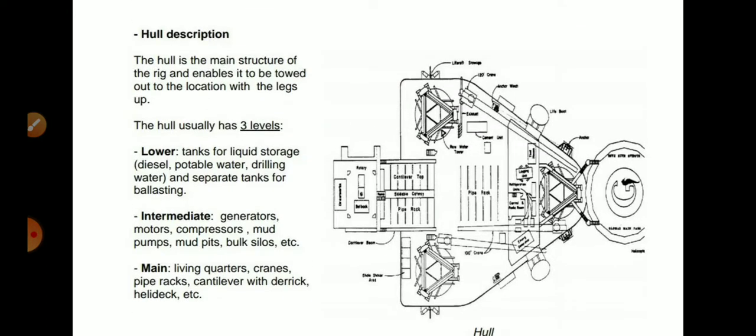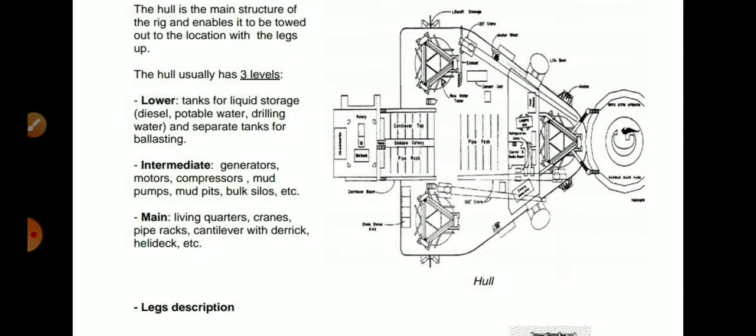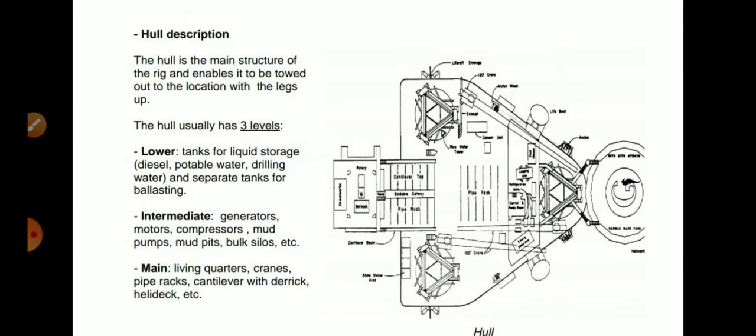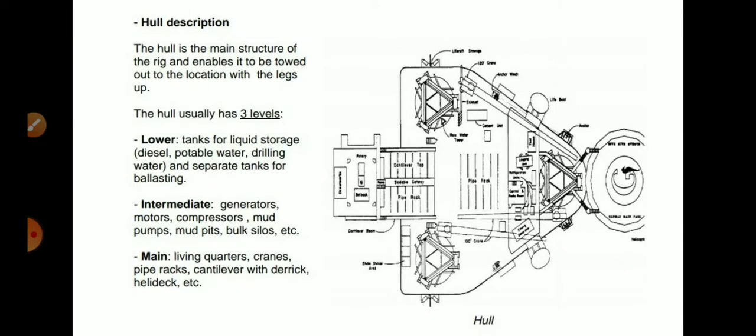The hull is the main structure of the rig and it allows the rig to be towed out to the location with the legs up. The hull usually has three levels: lower level, intermediate, and main level. The lower level contains tanks for liquid storage — diesel, portable water, drilling water, and separate tanks for ballasting. The intermediate level contains generators, motors, compressors, mud pumps, mud pits, bulk silos, etc. The main level contains living quarters, cranes, pipe racks, cantilever with the derrick, and helideck.